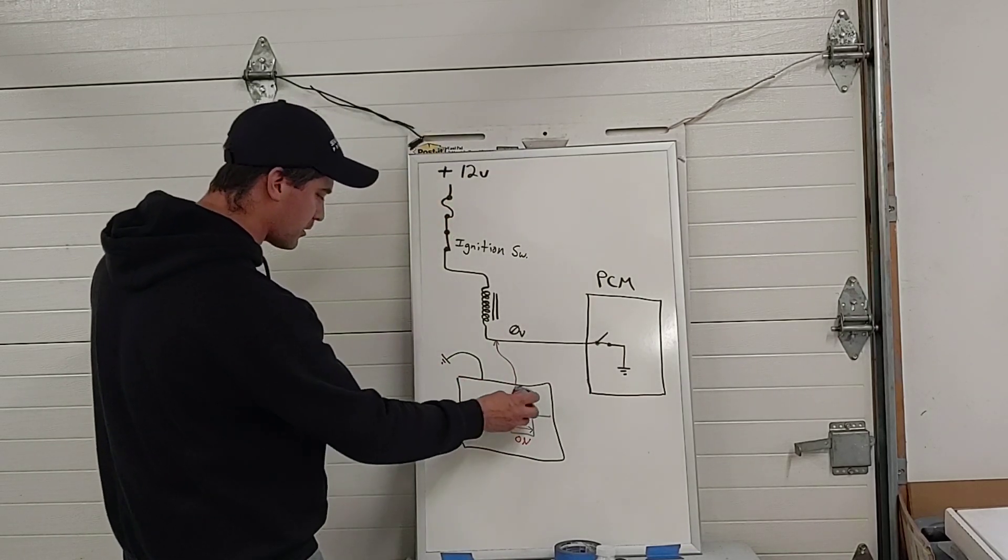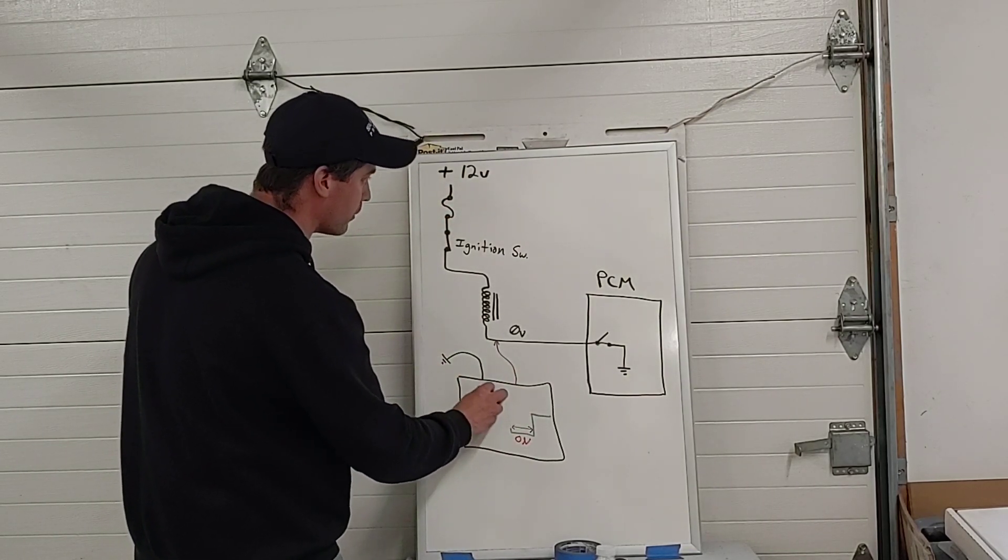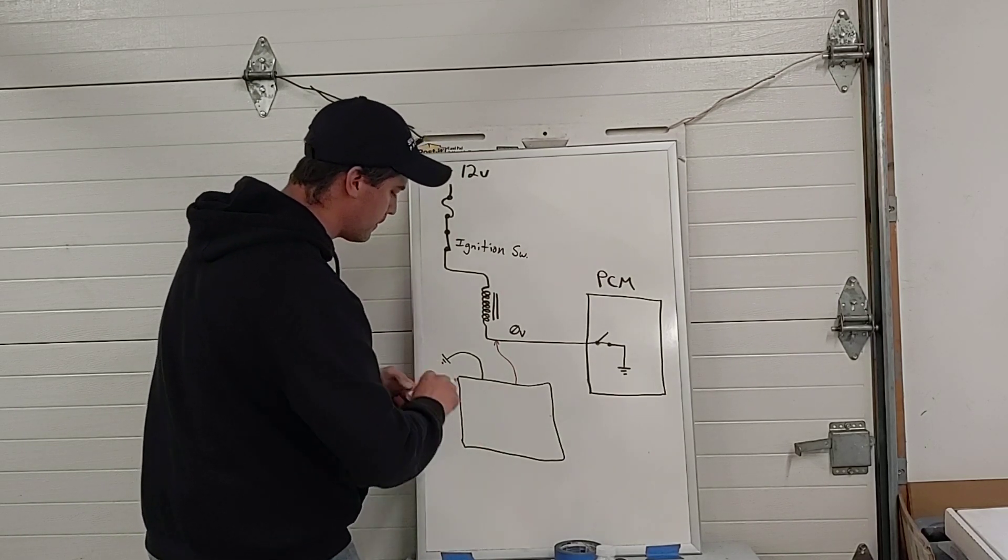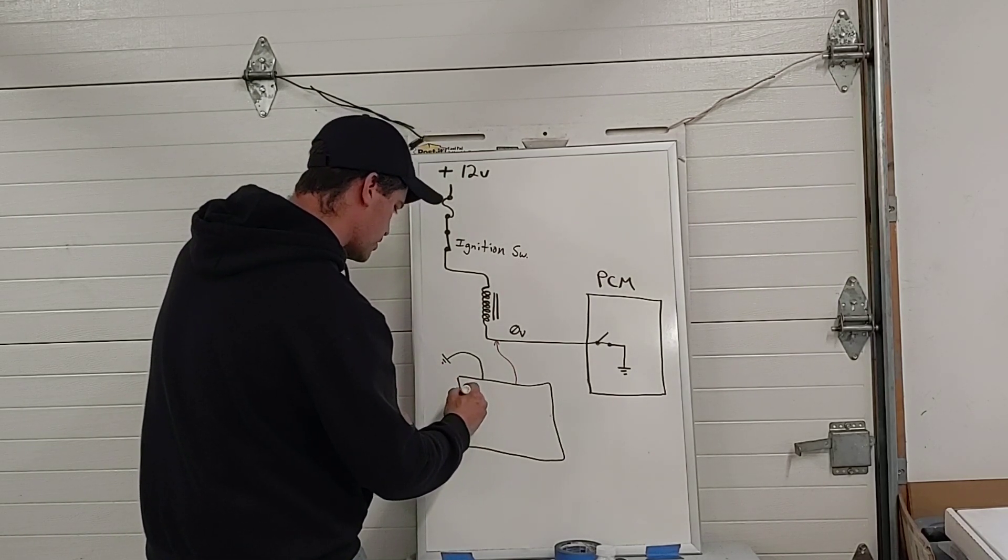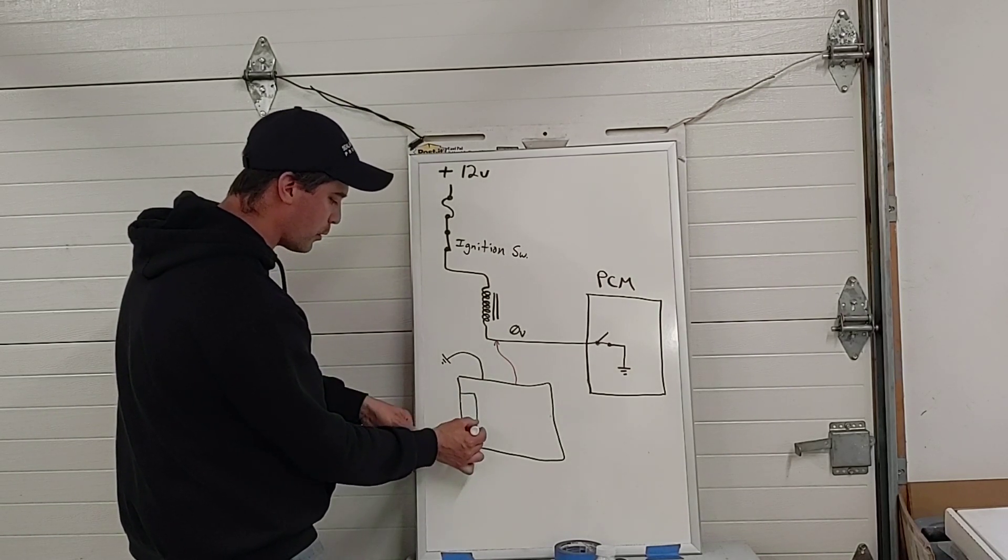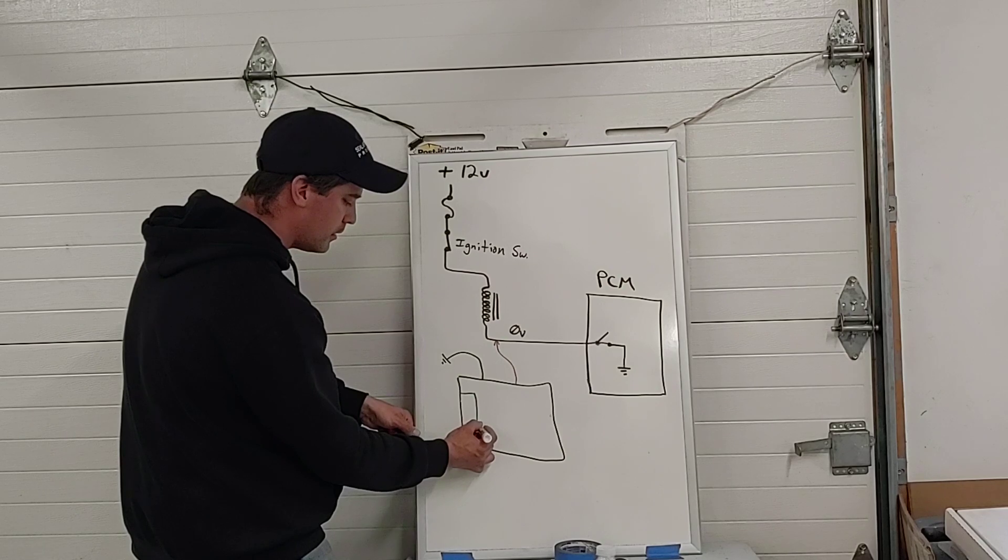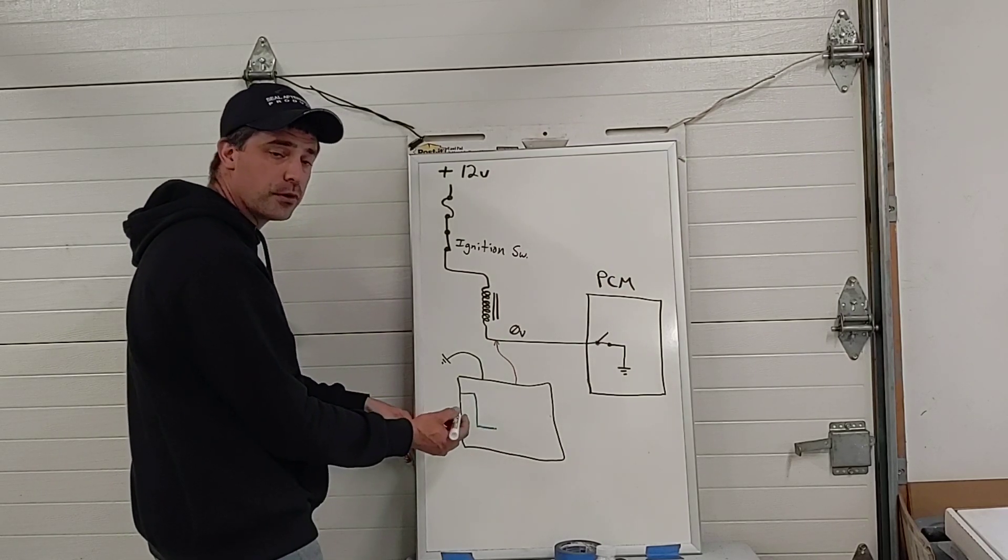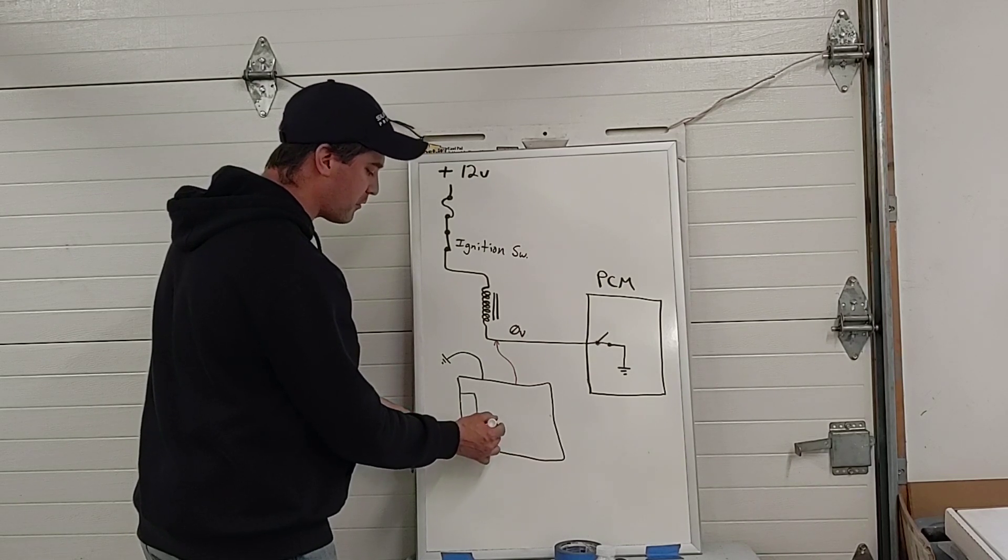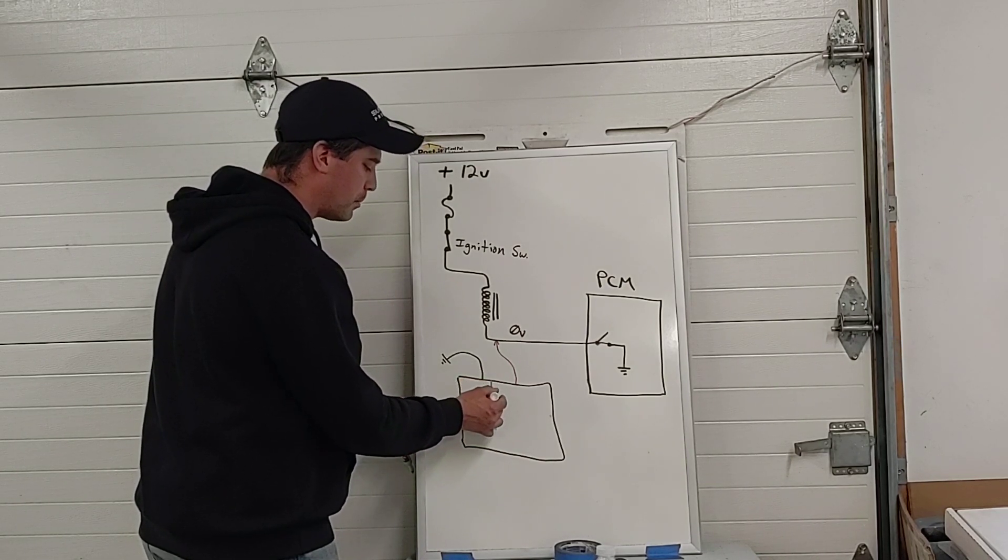So the reality of an injector waveform is it's going to look a little bit different. When the injector is off, the wave is high. When the injector is turned on, the wave is pulled down to ground. For the duration of the injector being on or open or spraying fuel, the wave is going to be low. And when the injector turns off, we actually get a spike.